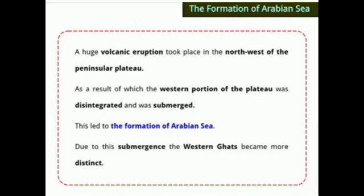A huge volcanic eruption took place in the northwest of the peninsular plateau. Due to this divergence of the plates, volcanic activities caused the western portion of the plateau to disintegrate and submerge. As a result, the Arabian Sea was formed. Due to this submergence, the Western Ghats became more distinct and clear.